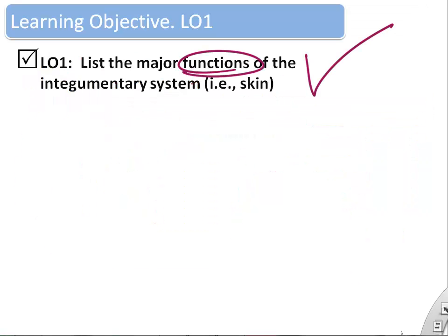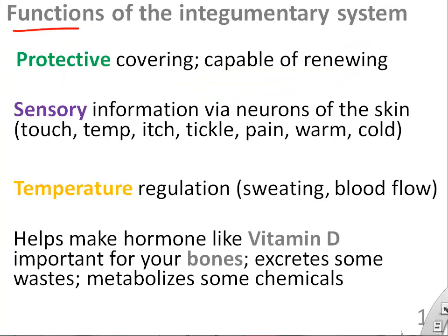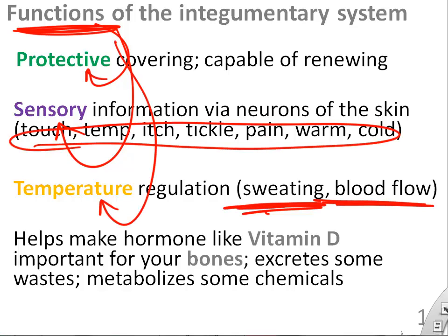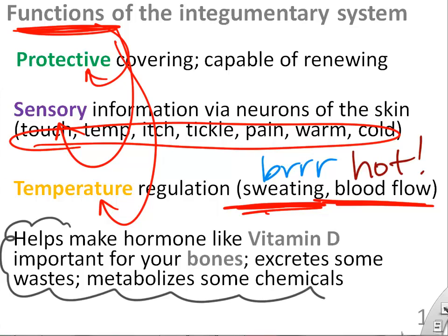Let's list the major functions of skin, sometimes called the integumentary system. Of course, it's for protection and a lot of sensation from the skin. Temperature regulation involves sweating and blood flow regulation in the skin, whether you're hot or cold.